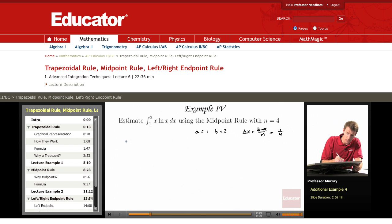The midpoint rule says the integral is approximately equal to 1/4 times f of the midpoints of these four intervals.